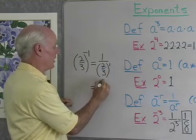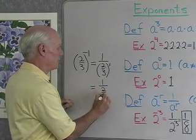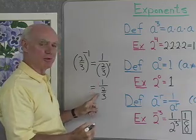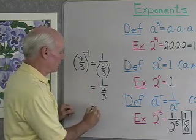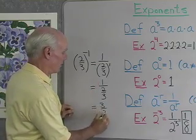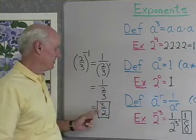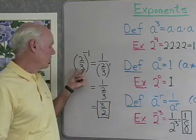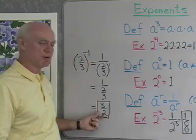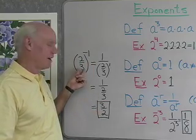Two thirds to the first power I know is just two thirds. And one over two thirds is the reciprocal of two thirds which is three halves. So again, my negative exponents give me reciprocals. Two thirds to the negative one turns out to be three halves, the reciprocal of two thirds.